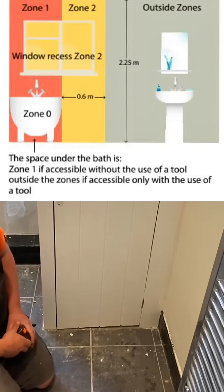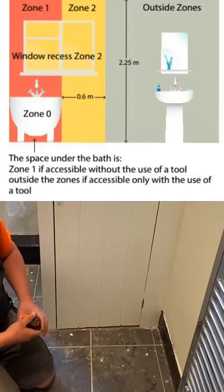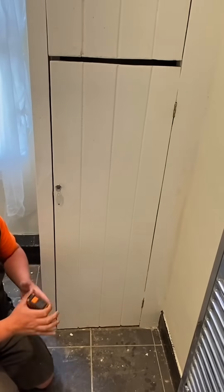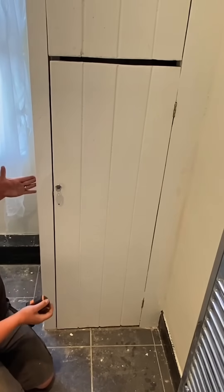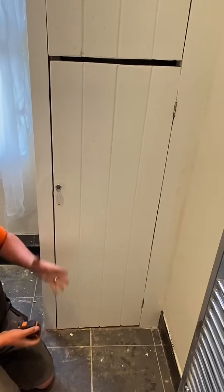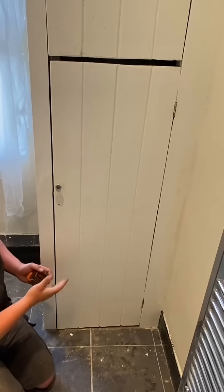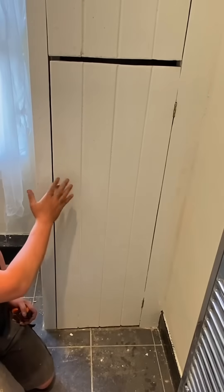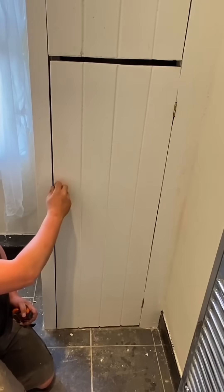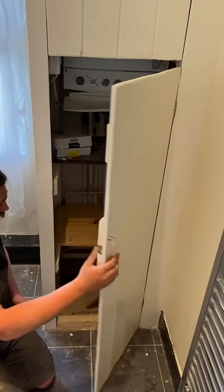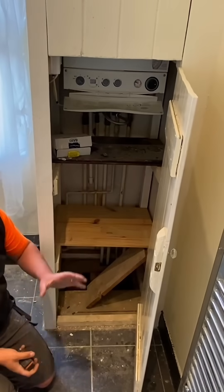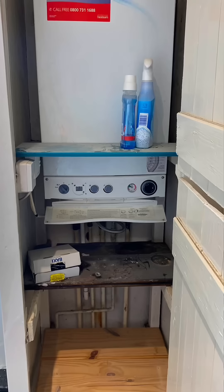Would zone two actually go part way into the airing cupboard? No, it wouldn't. The same way you move into a different location when you walk through the bathroom door — the same principle applies here. Because we have a door on the airing cupboard, the space inside is actually classed as not being in the special location itself. When the door is open, we could be in zone two.